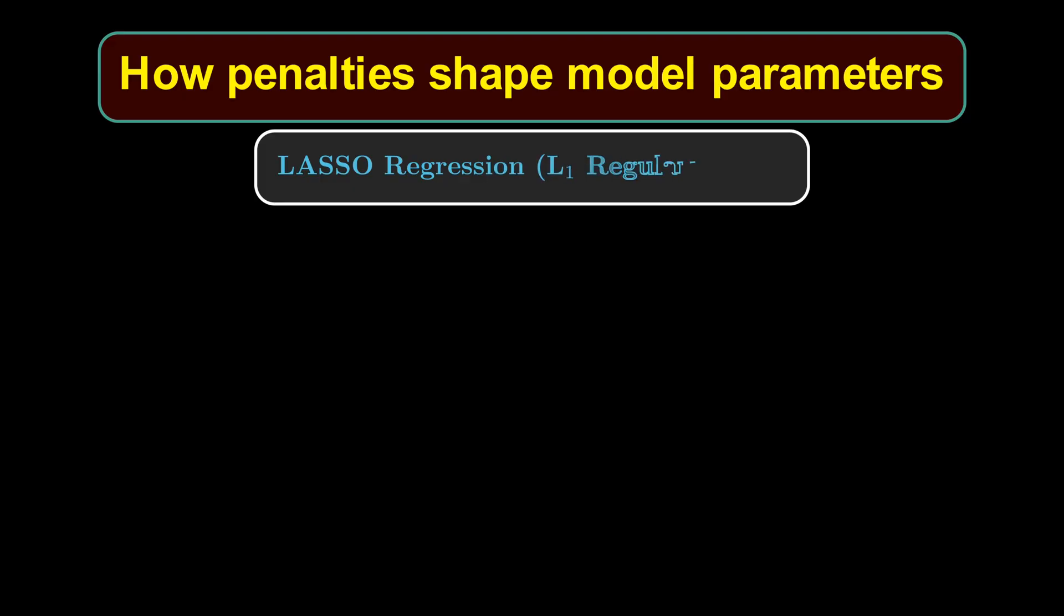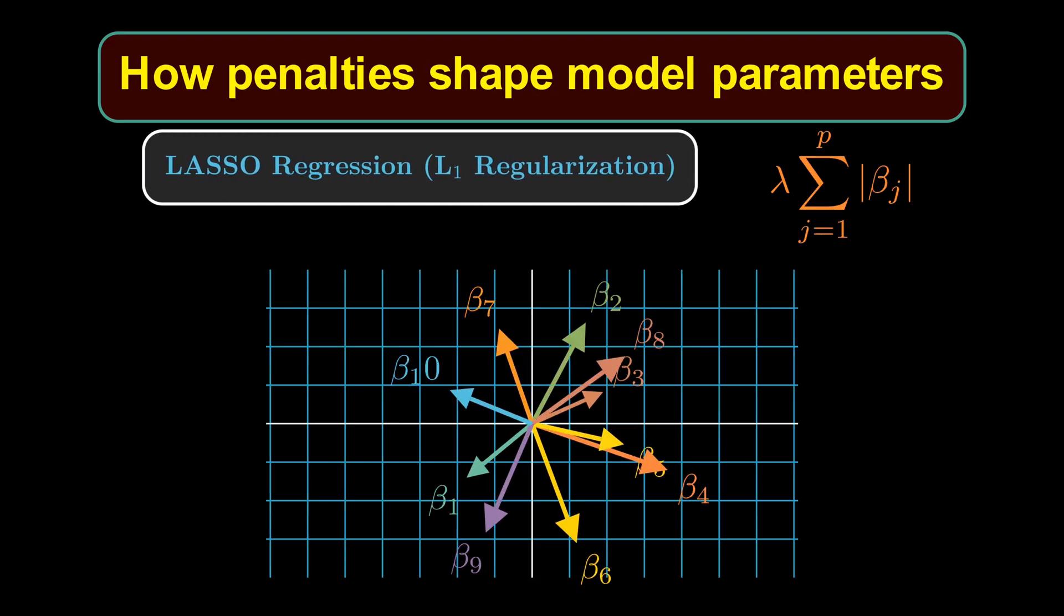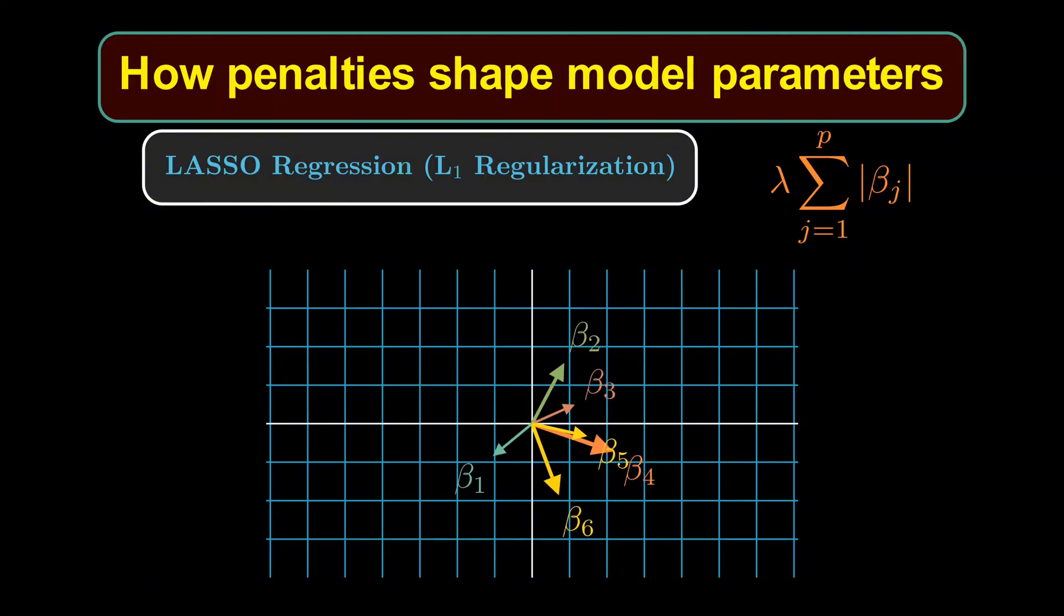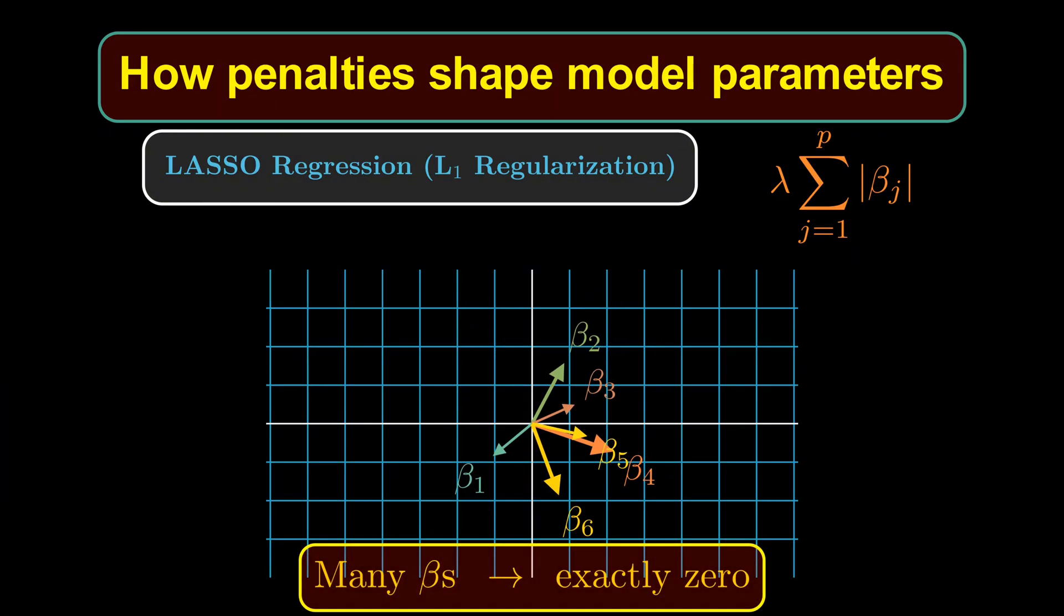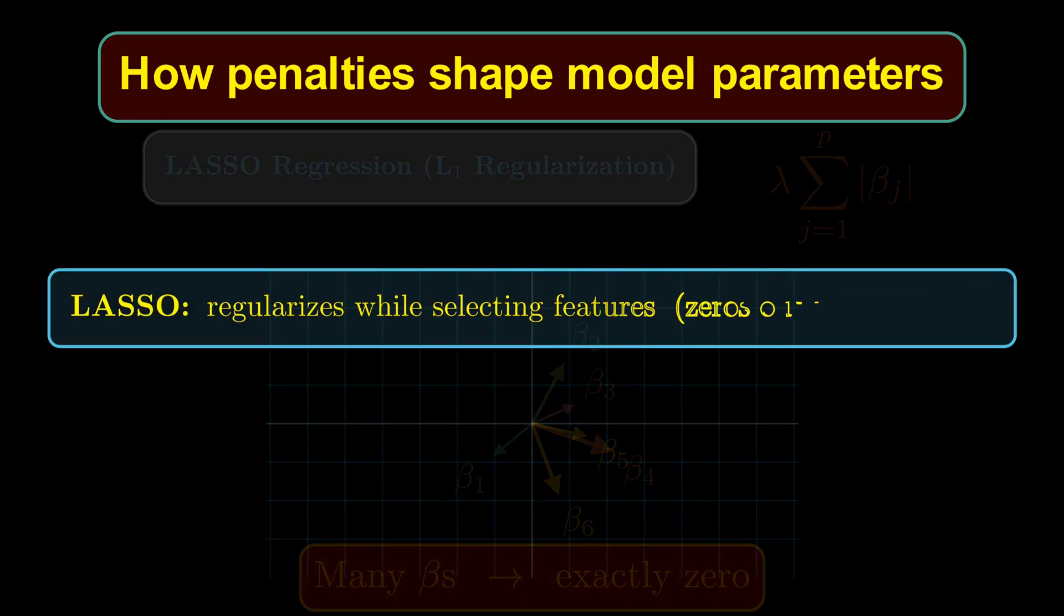In lasso regression or under L1 regularization, the penalty is, here, the effect is stronger. Some coefficients are driven exactly to zero, creating sparsity. Lasso not only regularizes, but also performs feature selection, making it ideal for high-dimensional data sets where only a few features matter.